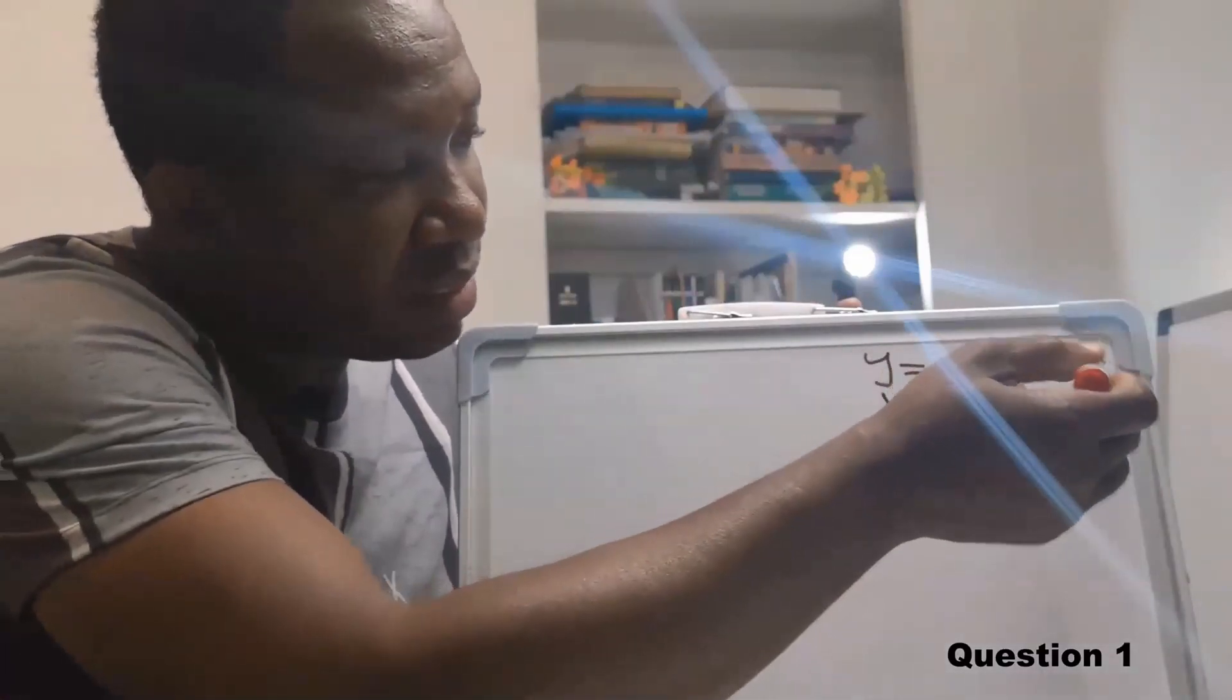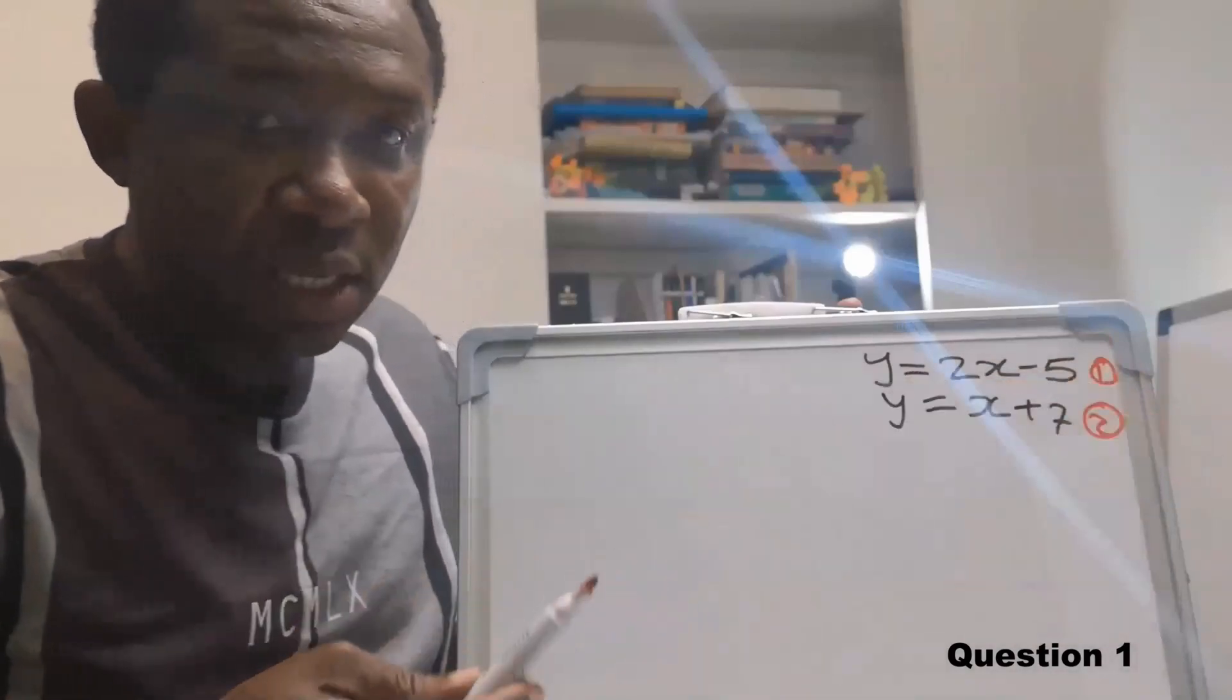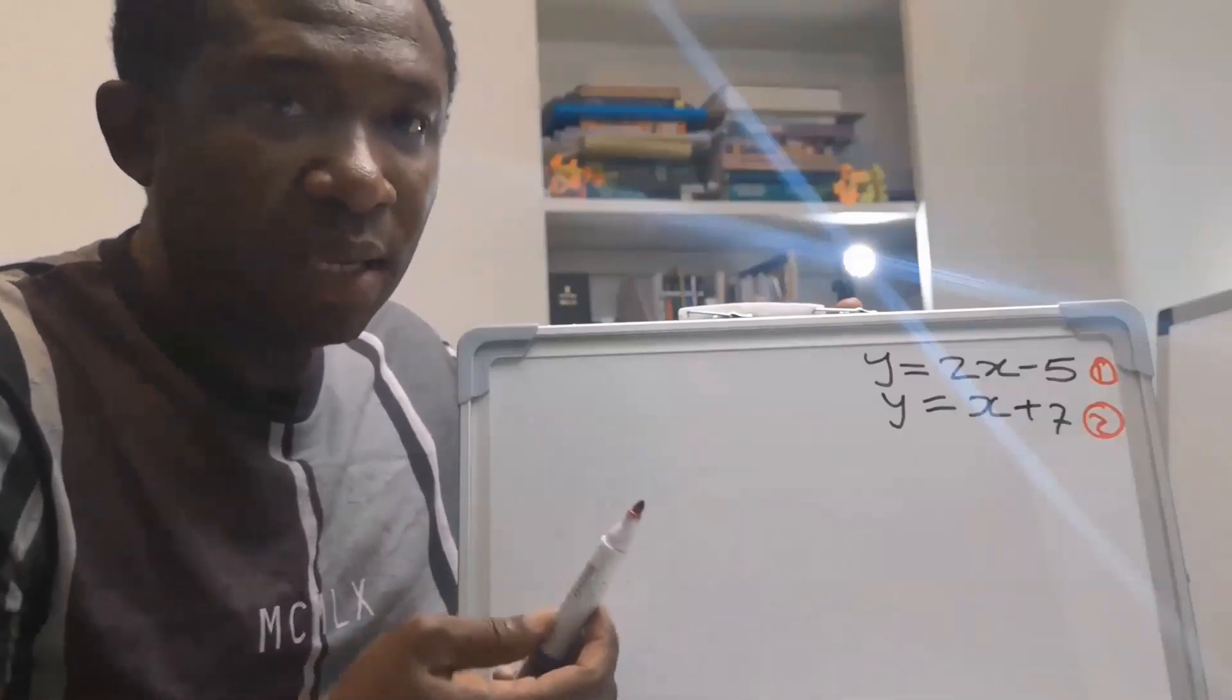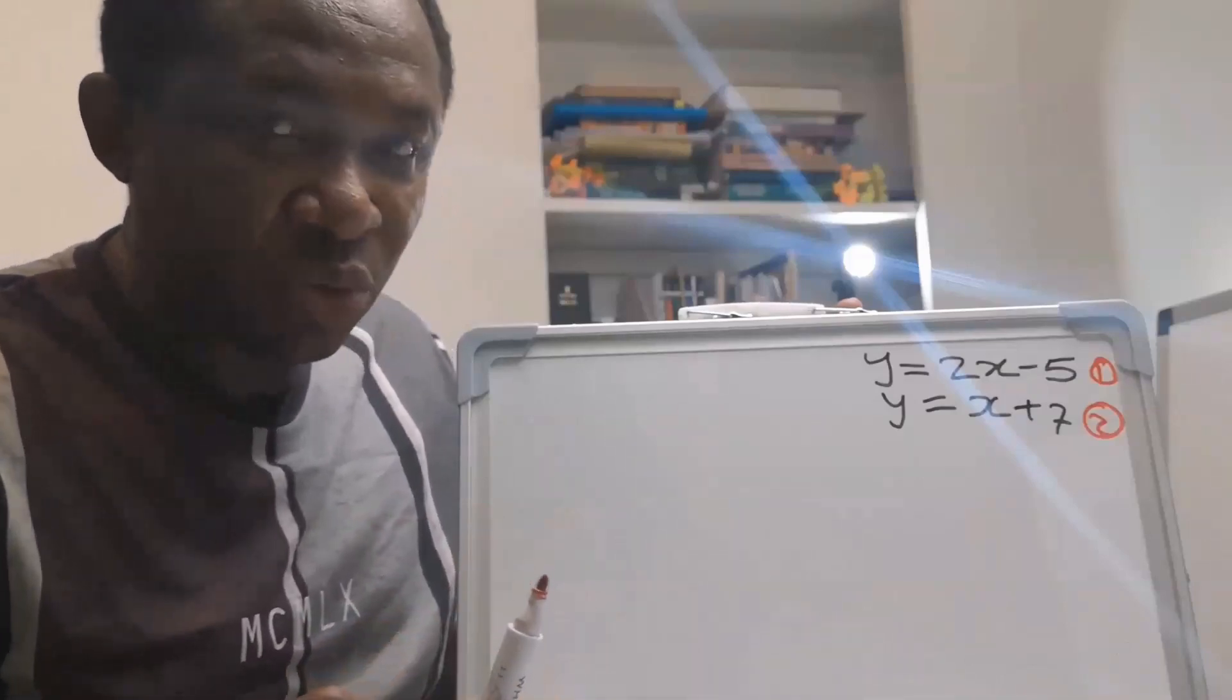and this is equation 1, and this is equation 2, and we have to find X and Y in this simultaneous equation.